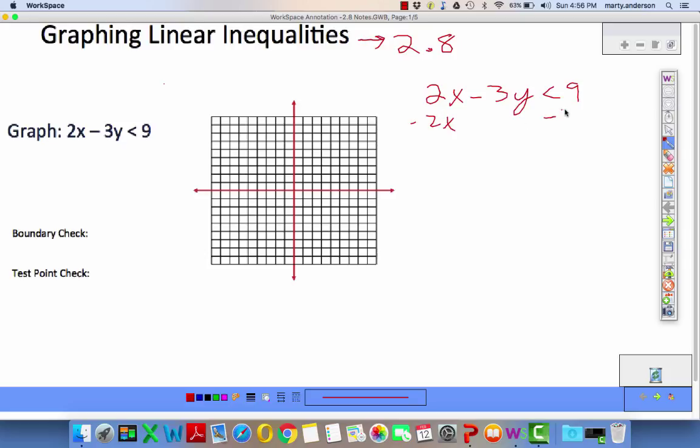So I move some stuff around. I get negative 3y is less than negative 2x plus 9. Divide everything by negative 3. If I divide by negative, I must remember to change the sign from less than to greater than. I end up with y is greater than 2/3x minus 3.